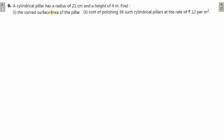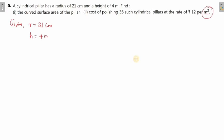Let's move to the next question. A cylindrical pillar has a radius of 21 centimeter and a height of 4 meter. We need to find the curved surface area and then the cost of polishing 36 such pillars at rupees 12 per meter square. Since the cost is in meter square, we convert: 21 centimeter = 21/100 = 0.21 meter.